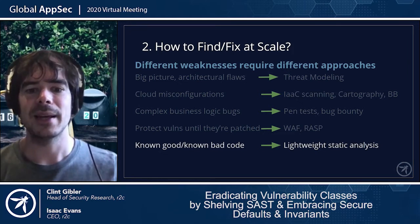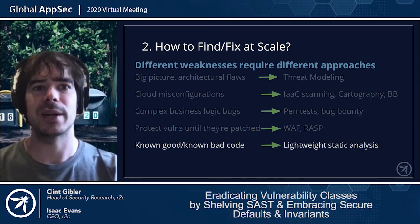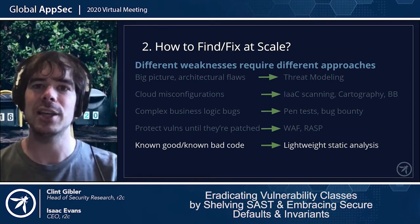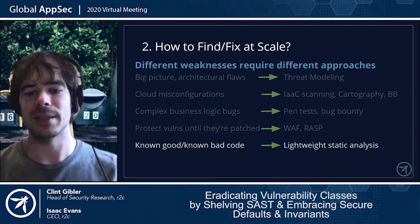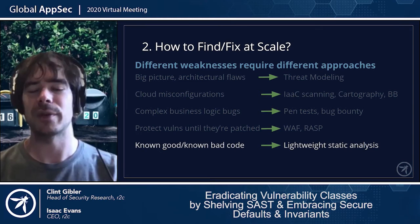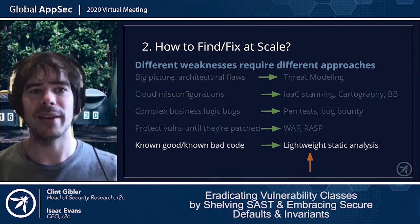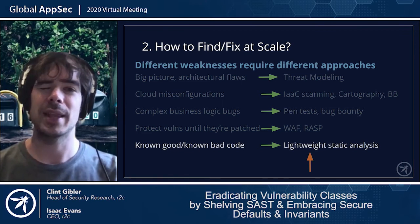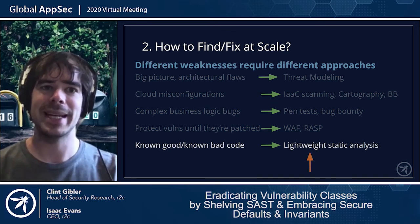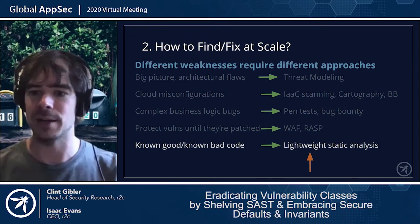Depending on the weakness, different approaches work better. For big-picture architectural flaws, threat modeling is more appropriate since those issues relate to how things fit together, not just the code. For this talk, we'll focus on known-good or known-bad code patterns and how to address them with lightweight static analysis. The key point is: don't try to apply the same approach to every issue — it really depends on the situation.